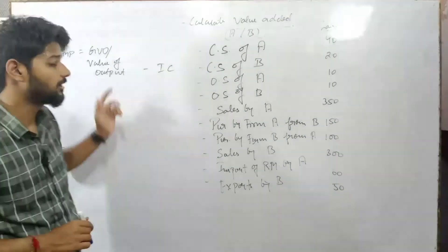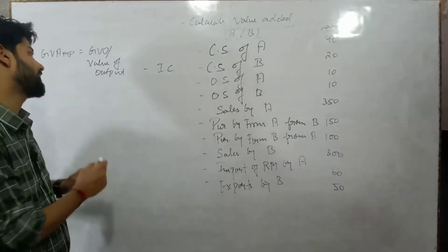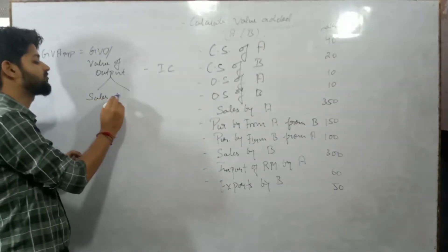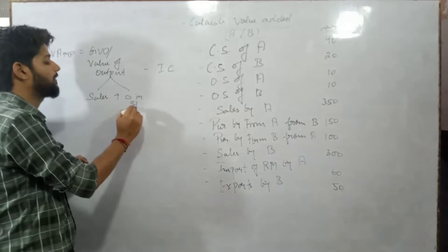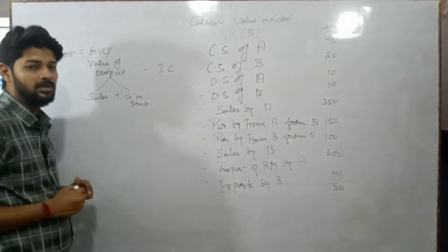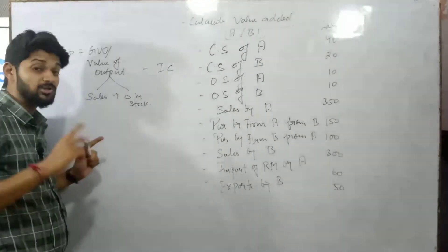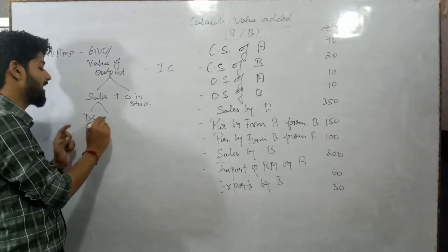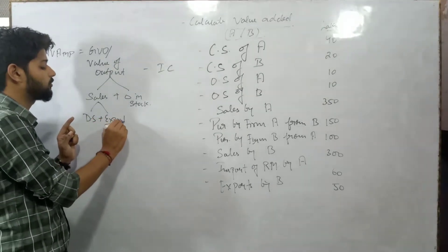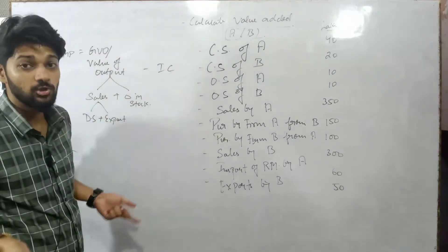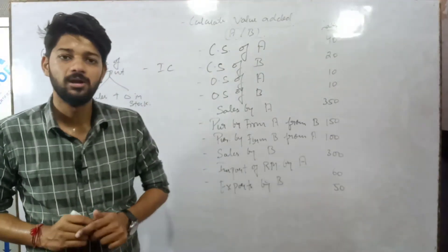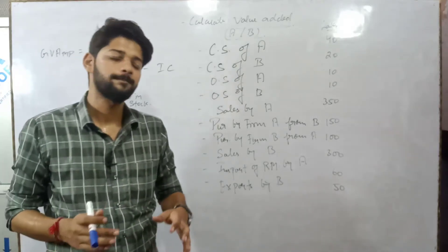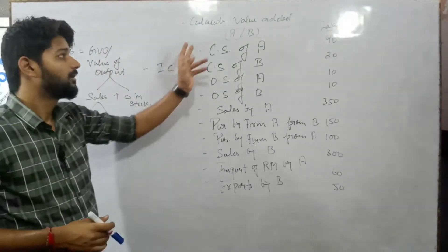We have to look at Value of Output, which is divided into two parts: Sales plus Change in Stock. Remember that sales can also be of two types — one is Domestic Sales, and if you add the value of Exports, it becomes Total Sales. If Total Sales is given, it is pre-assumed that the value of exports is already included in it. So let us solve — first, we have to calculate the value added by Firm A.